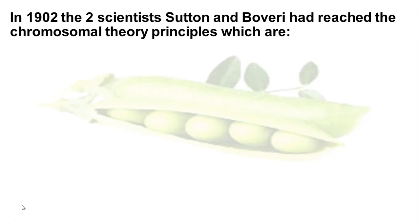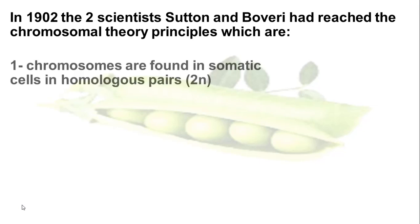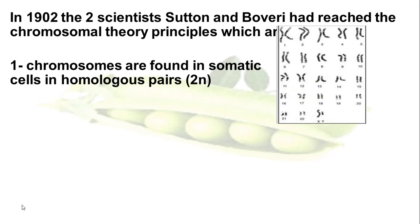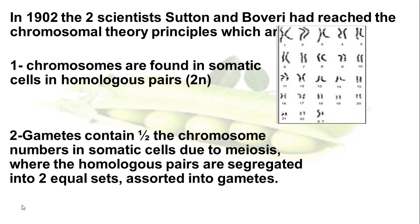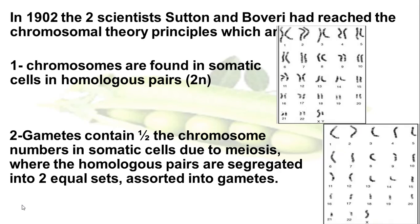The genetic science is relatively new science. In 1902, the two scientists Sutton and Boveri had reached the chromosomal theory principles, which are: chromosomes are found in somatic cells in homologous pairs, or what we call 2N, as we can see here in the karyotype, and gametes contain half the number of chromosomes in somatic cells due to meiosis, where the homologous pairs are segregated into two equal sets assorted into gametes.